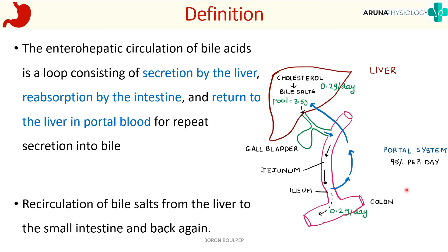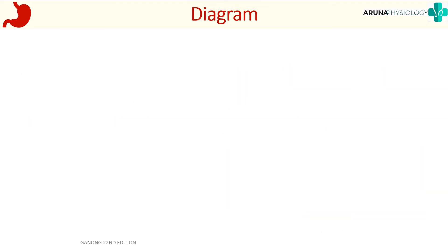We will see this concept more with the help of a diagram. We know that bile salts are produced inside the liver from cholesterol, and the amount of bile salts produced by the liver per day is around 0.2 grams. The total amount of bile salts, that is the bile salt pool, consists of around 3.5 grams.